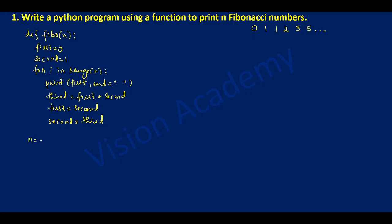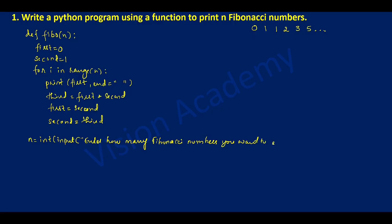Aligned with the def statement, I'm going to declare a variable n of type integer, and in the input statement I'm going to ask the user to enter how many Fibonacci numbers they want to enter, closing with double quotation marks and closing the bracket.